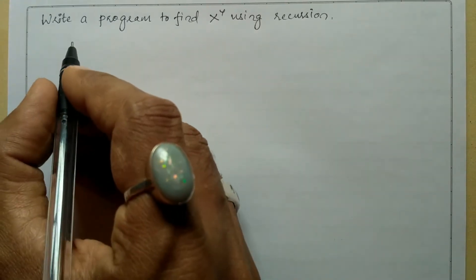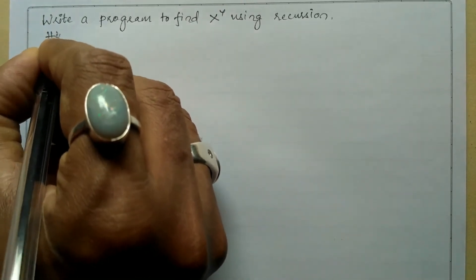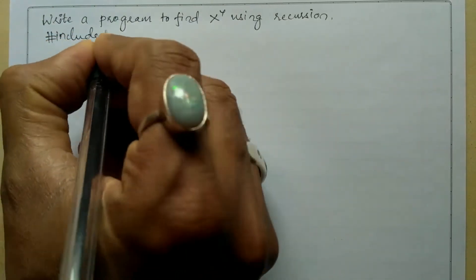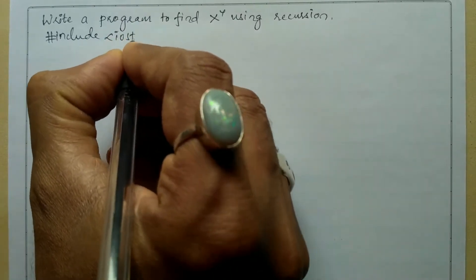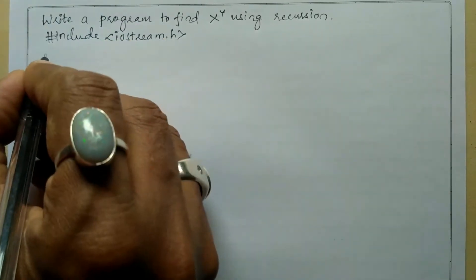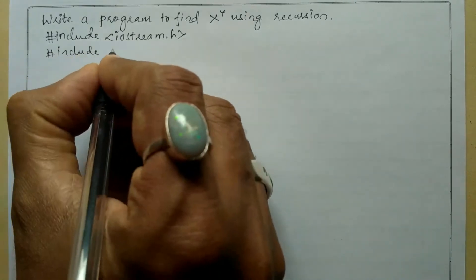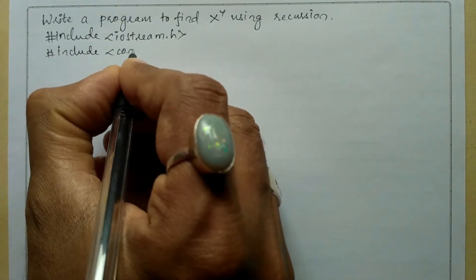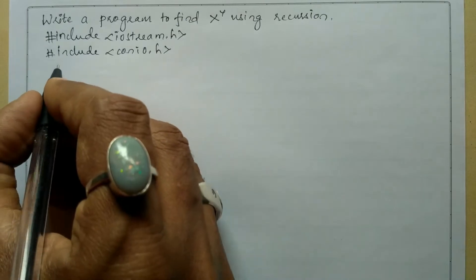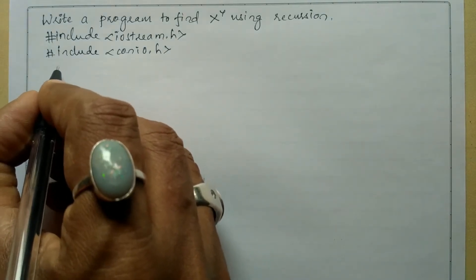What is a stopping condition and how is it used — everything we are going to learn in this program. Let us begin with the preprocessor directives: #include with angular brackets for the input-output stream header file, and the next preprocessor directive is #include for the console input-output header file.